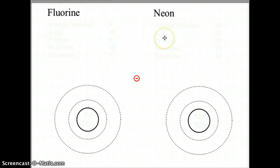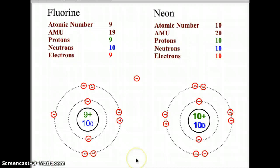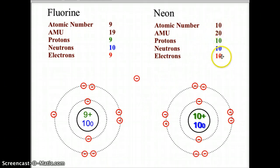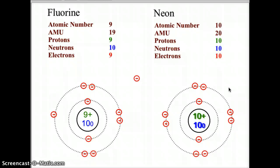Now we have fluorine and neon, which finish out the second row of the periodic table. Pause the video to complete both Bohr atom models, then check your answers. Fluorine has nine protons and ten neutrons with a mass of 19, with two electrons in the first orbital and seven in the second, leaving one empty space. Neon has ten protons, ten neutrons, and ten electrons — two in the first and eight in the second — giving a full outer valence shell. This is known as the rule of octet, which is why noble gases like neon are stable.